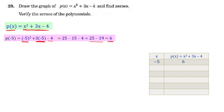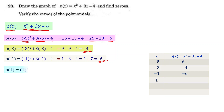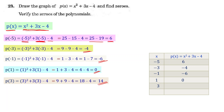Next, x = −3: p(−3) = (−3)² + 3×(−3) − 4 = 9 − 9 − 4 = −4. Let's write −4. Now x = −1: p(−1) = (−1)² + 3×(−1) − 4 = 1 − 3 − 4 = −6. Let's write −6. Then p(1): substituting x = 1 gives p(1) = 0. Next, p(3) = 14.